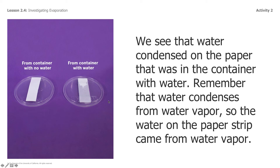As you can see, the water condensed on the paper that was in the container with water. Remember that water condenses from water vapor, so the water on the paper strip came from the water vapor. I didn't accidentally jostle the containers — the lids never ever touched the water. But if you'll notice with my container with water, it's wet, it's a little bit darker. This is showing that the water condenses from water vapor. So the water on the paper strip came from that water vapor. Even though you can't see it, it's there in the air in that space between the paper and the water in the container.